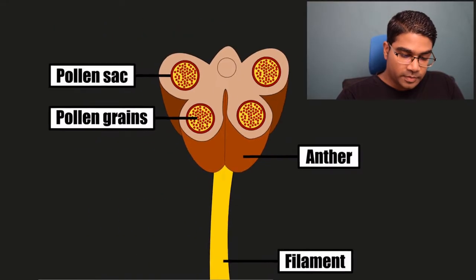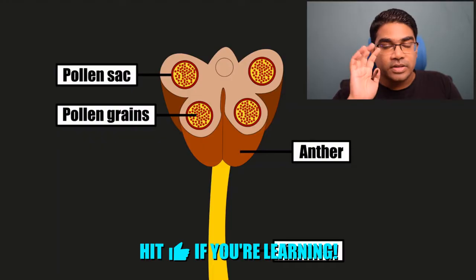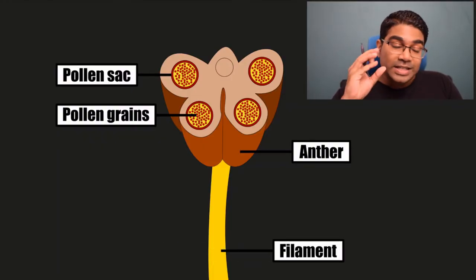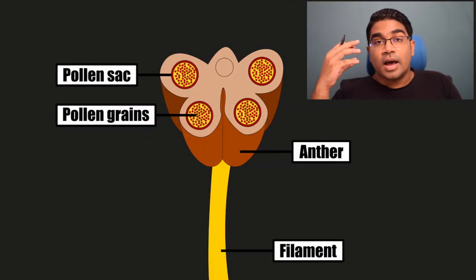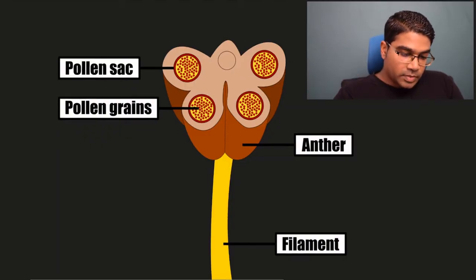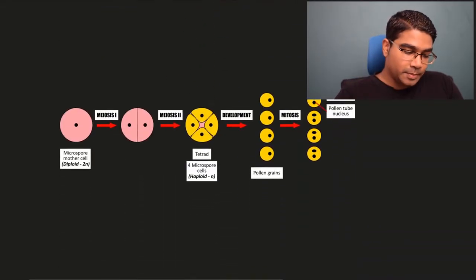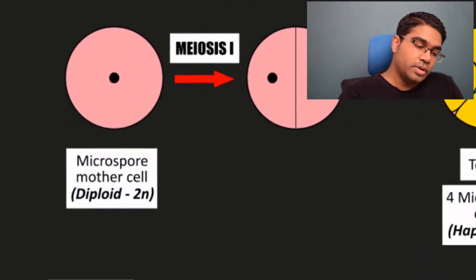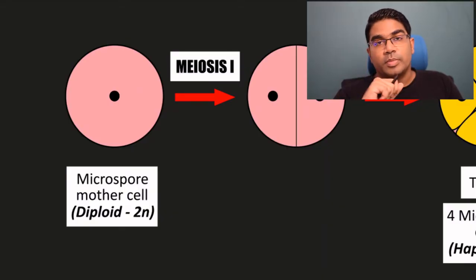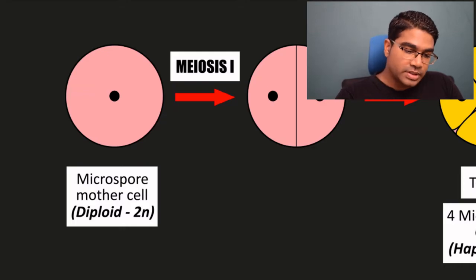Inside the anther, each anther has four pollen sacs. Inside each pollen sac there are hundreds of pollen grains — this is where the pollen grains develop. The pollen grain begins as a microspore mother cell. There are three processes in the development of a pollen grain, the first of which is meiosis.